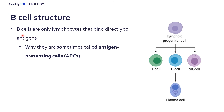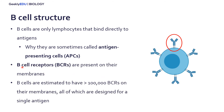B cells are the only white blood cells that actually bind directly to antigens, and this is why they're sometimes referred to as antigen presenting cells, or APCs, because they will present the antigen to other white blood cells such as a T cell or a natural killer cell. In this figure we have our stem cell of a white blood cell, and it can differentiate into any of these. The B cell is also the only one that can then differentiate further with B cell cloning. B cells have what are called B cell receptors, or BCRs, and this is what allows B cells to actually bind directly with antigens.